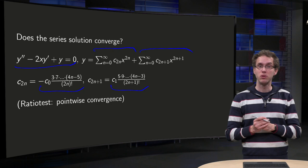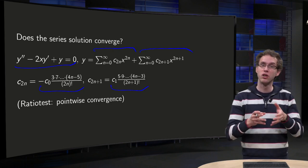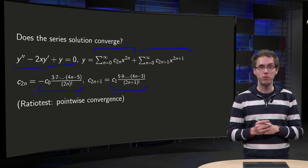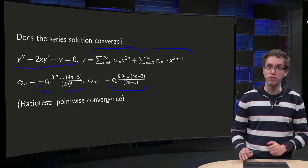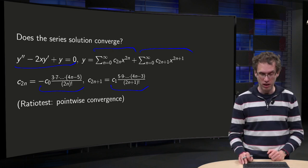We are going to do the ratio test which will give us pointwise convergence, so for every fixed x we will compute the ratio of a_{n+1} over a_n and then send n to infinity for x fixed.